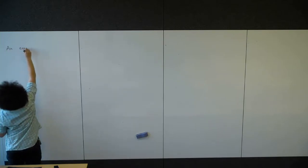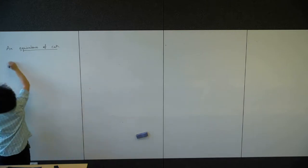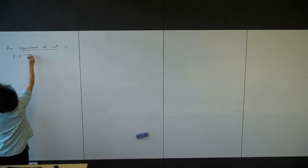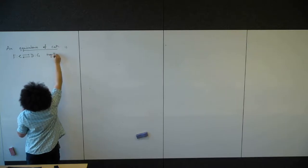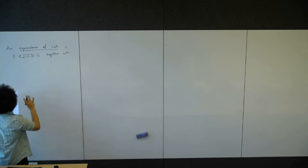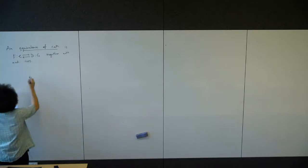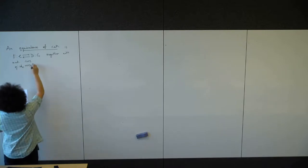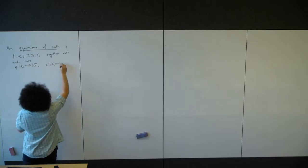So an equivalence of categories is — what do we have? We have a pair of functors: f from C to D and g from D to C, together with natural isomorphisms: eta from the identity on C to g composed with f, and epsilon from f composed with g to the identity on D.